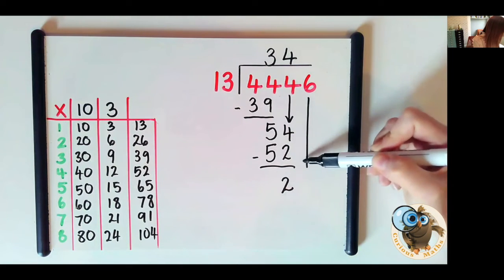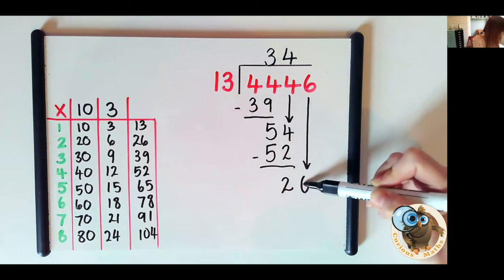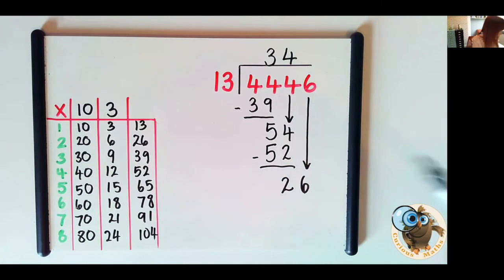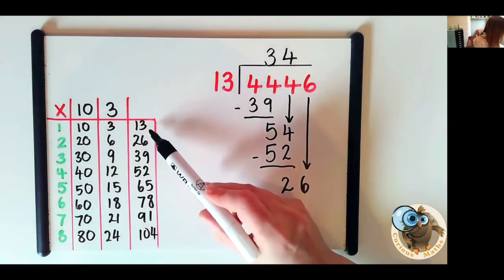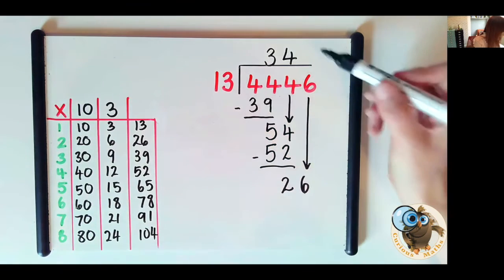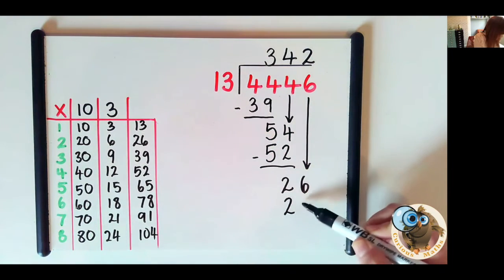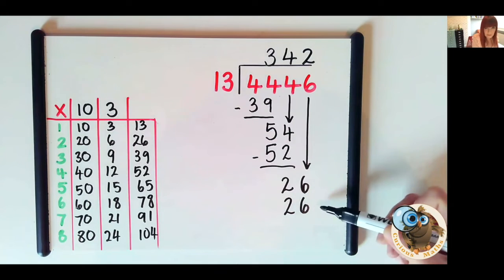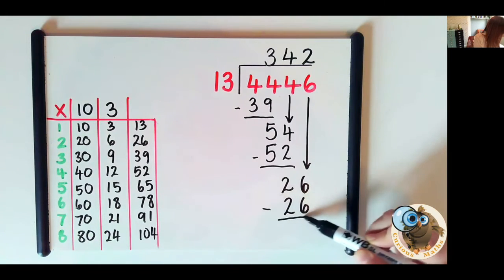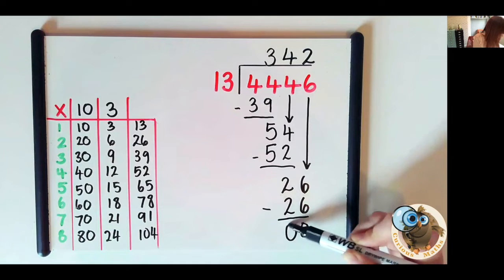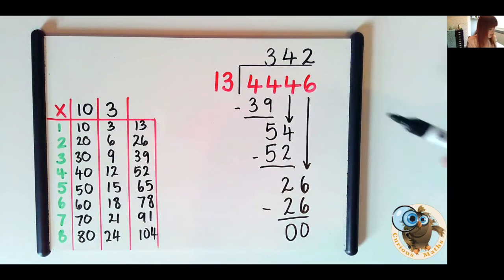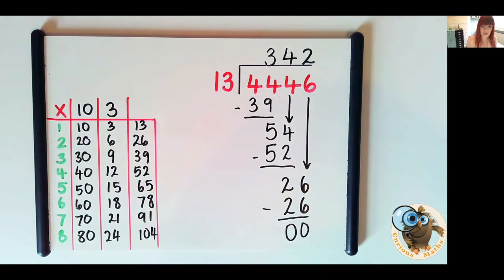Right so we had 54 take away 52, we have two remaining. Bring the next number down. We now have 26. How many 13s in 26? Let's look at our chart. We can see that there are two 13s in 26. So just like the other ones we must remember to still take that away because our aim is to get to the bottom and have 0 so that we know that we have divided the whole number.